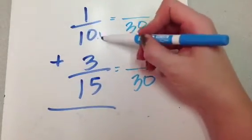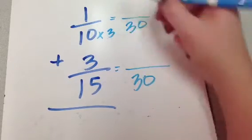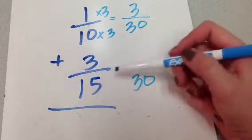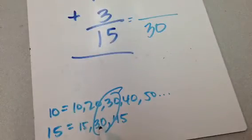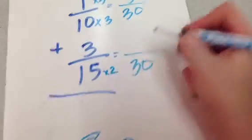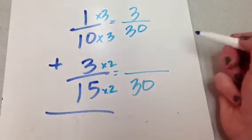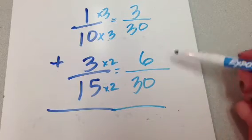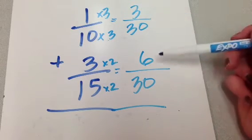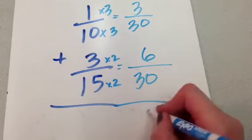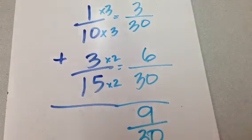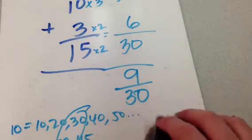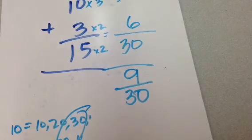So, ten times what gave me thirty? Well, it's times three. Three times one is three. Fifteen times what gave me thirty? One, two. Two. So, it was times two. Got to multiply my top number by that as well. Three times two is six. So now I just add, right? Six plus three is nine. My bottom number stays the same.